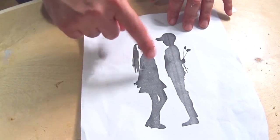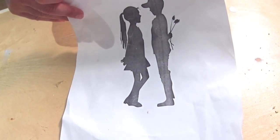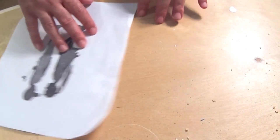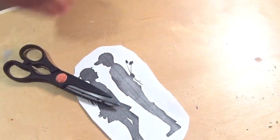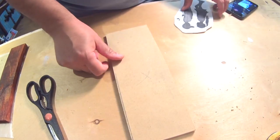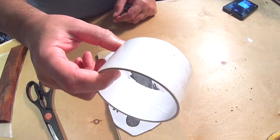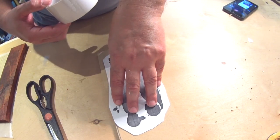So, while that dries we'll go ahead and prep this for scroll sawing. We've got our board and we'll use some packing tape to secure the image to the board.